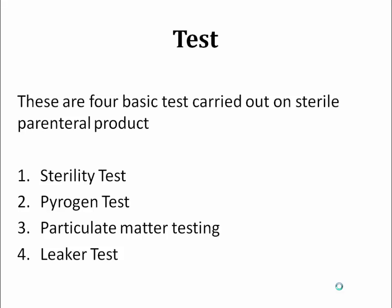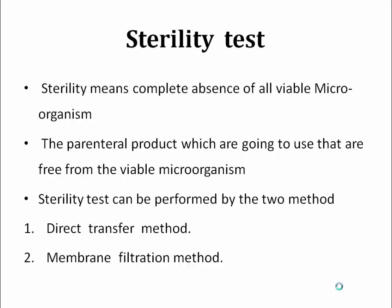These are the more commonly used tests for parenteral products. In the sterility test, we predict whether the product is sterile or not. In the pyrogen test, we determine whether pyrogen is present in the test sample. In particulate matter testing, we check whether the solution is free from particulate matter. In the leakage test, we determine any type of leakage present in our ampoules or containers used for the parenteral product.